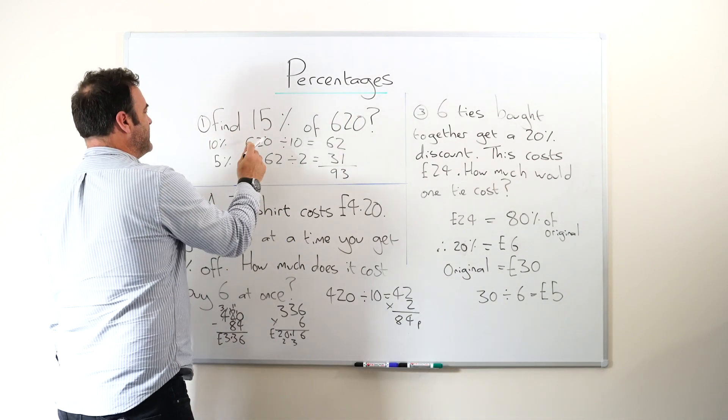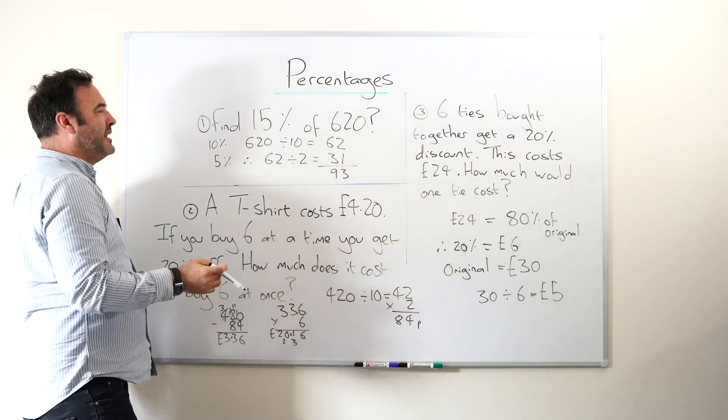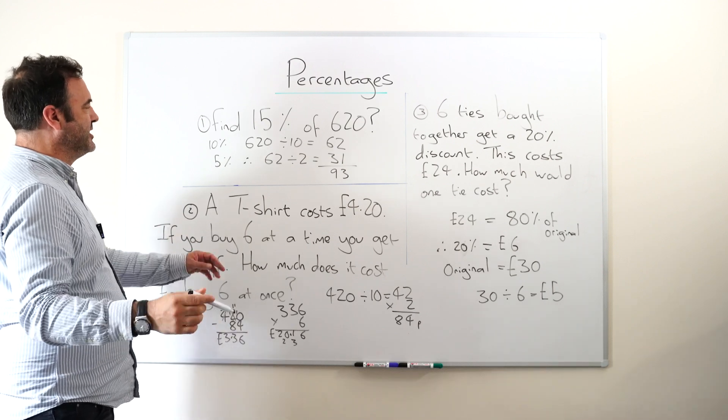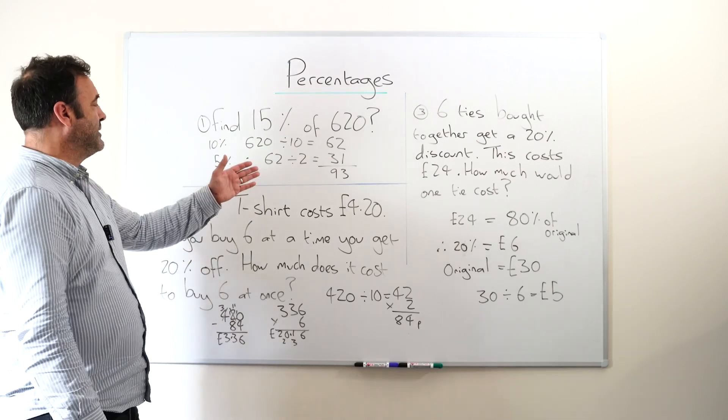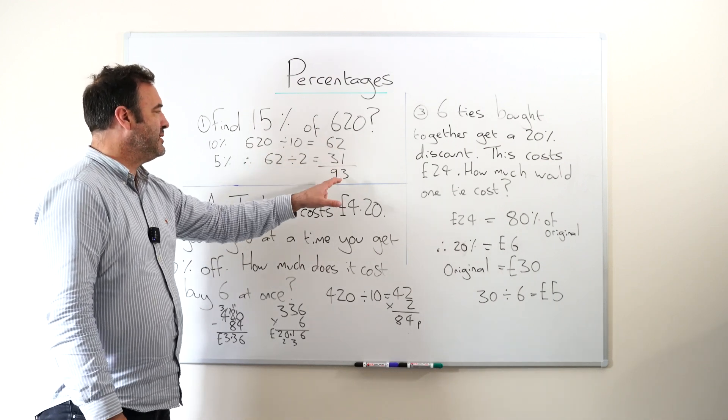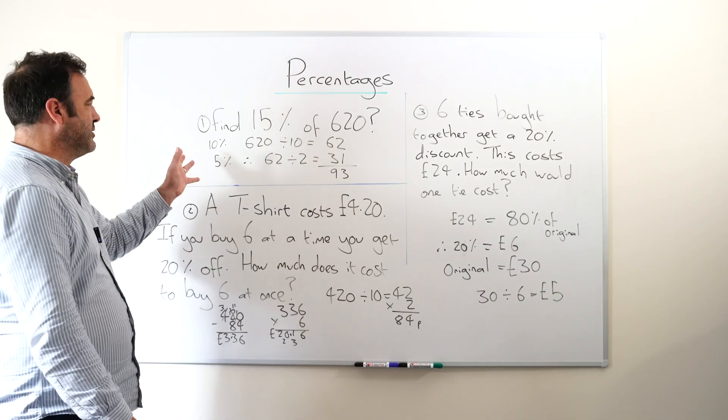So we know that 10% of 620 is actually 62. Now because 10% is 62, we now know that 5% would just be half of that again, so that would be 62 divided by 2 is 31. Add all of this up, 62 plus 31, you get 93. There's the answer.